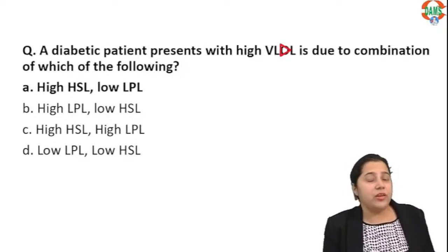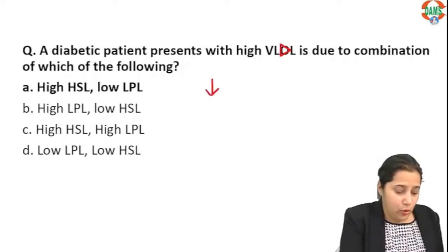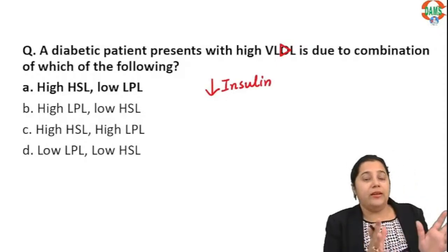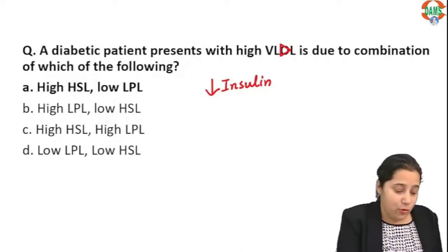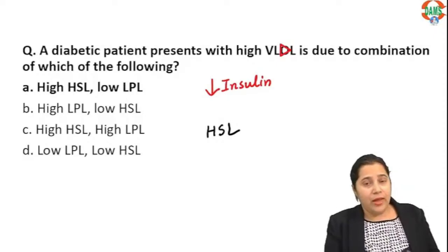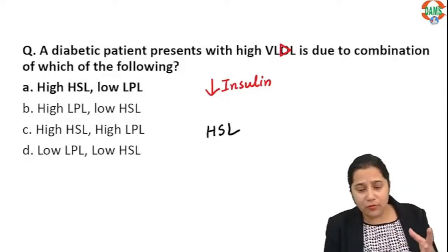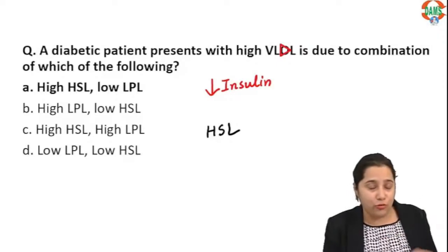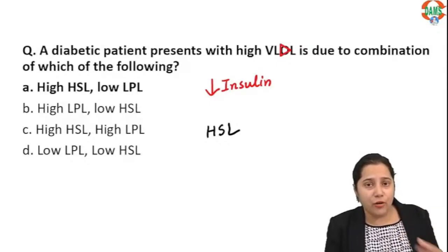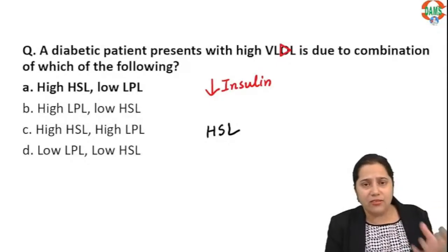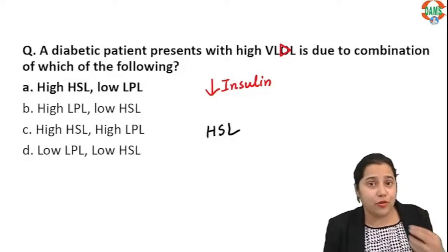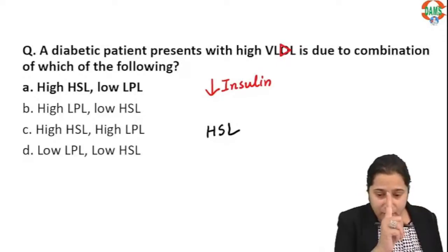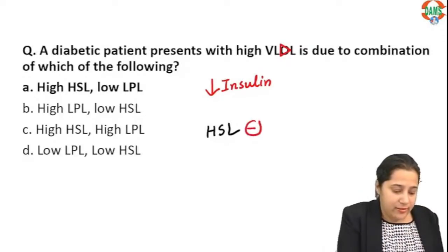A diabetic patient presents with high VLDL — it is due to a combination of which of the following? In a diabetic patient, low insulin levels are present. There is an enzyme called hormone-sensitive lipase, which is sensitive to many hormones: glucagon, epinephrine, norepinephrine, LH, FSH, MSH, and ACTH. It is inhibited by only one — insulin.